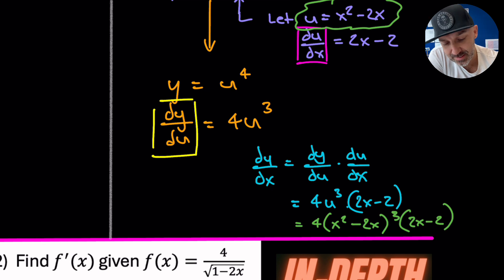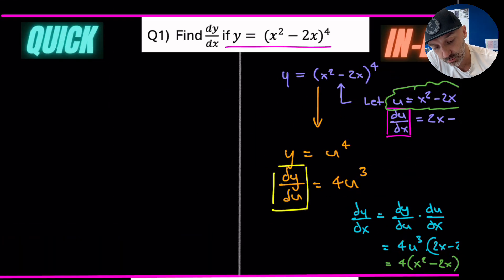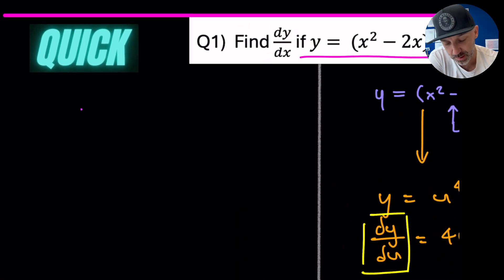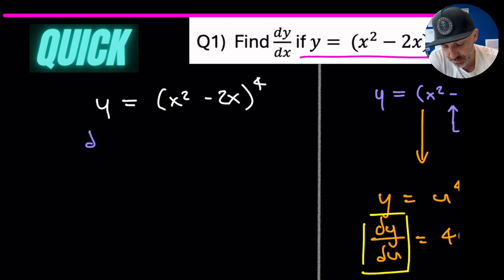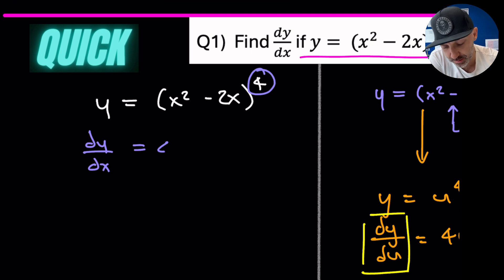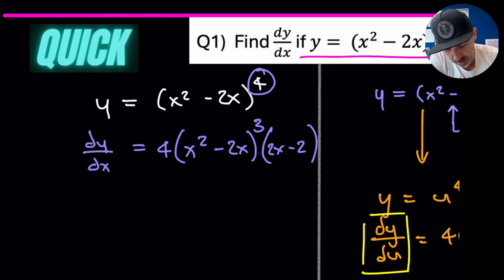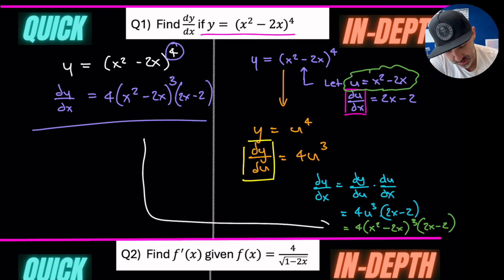There is a quicker method — it is essentially the chain rule, but several steps are performed simultaneously. Starting with y = (x² − 2x)⁴, we follow these steps: multiply by the power of the bracket (4), keep everything in the bracket the same and subtract 1 from the power, then multiply by the derivative of the bracket (2x − 2). Comparing both results, they are exactly the same.